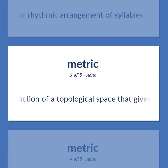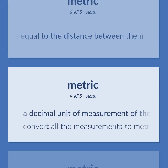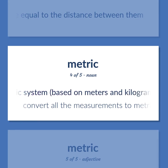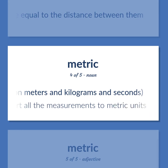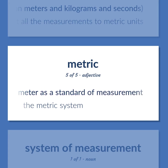Metric: A function of a topological space that gives, for any two points in the space, a value equal to the distance between them. A decimal unit of measurement of the metric system, based on meters and kilograms and seconds. Convert all the measurements to metric units, based on the meter as a standard of measurement. The metric system.